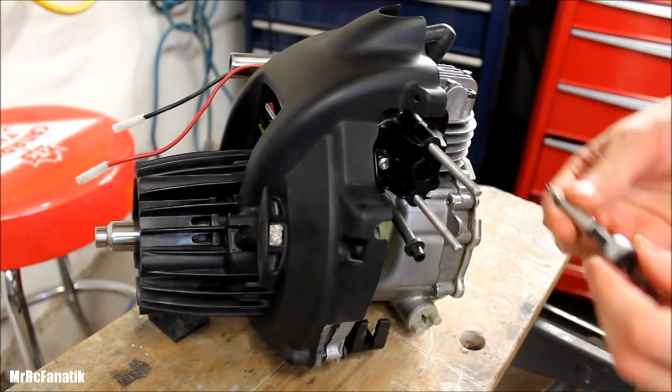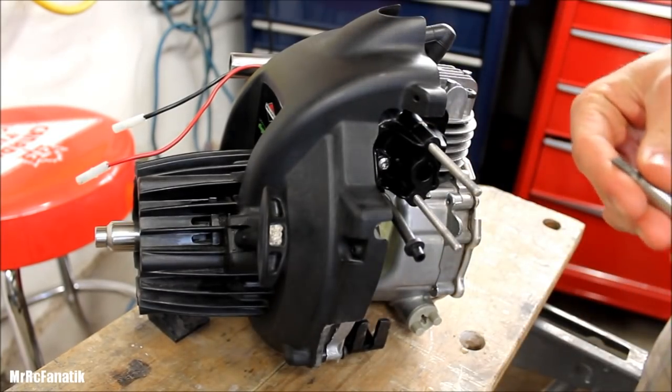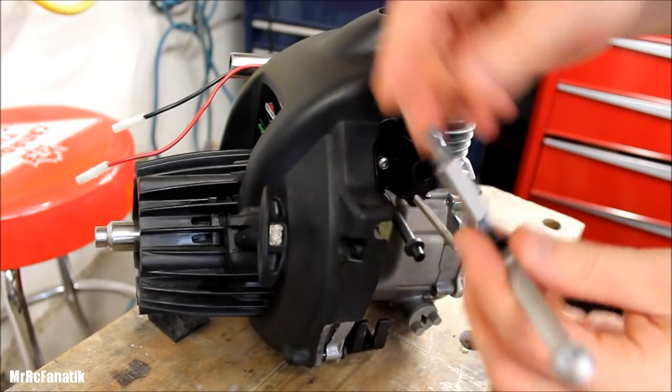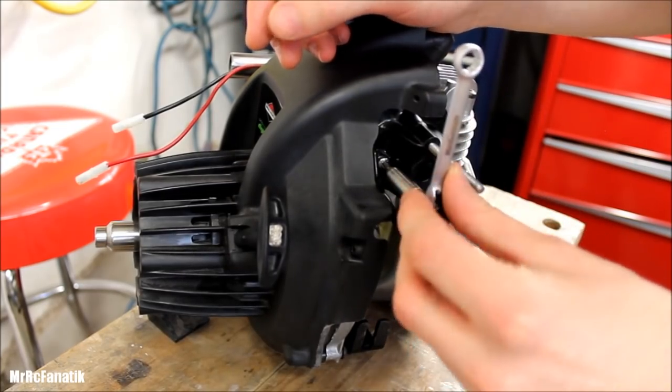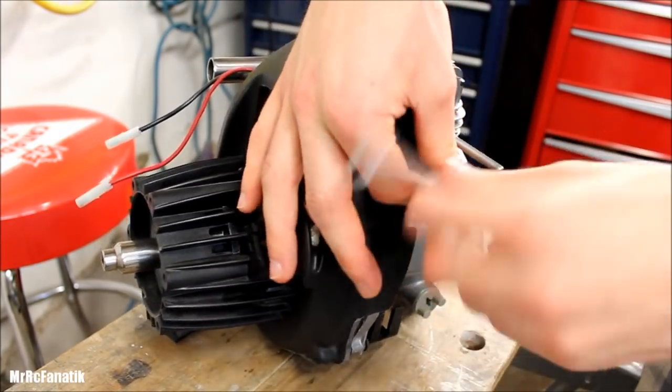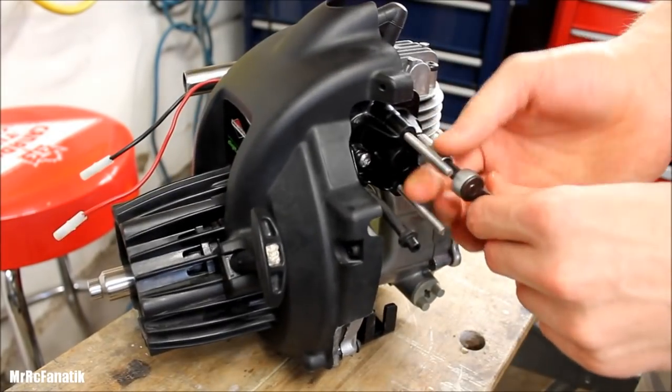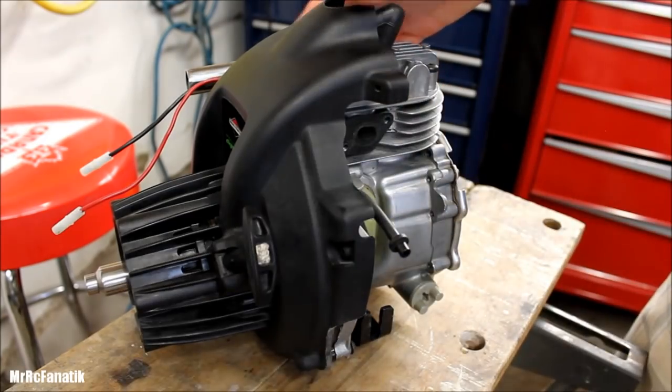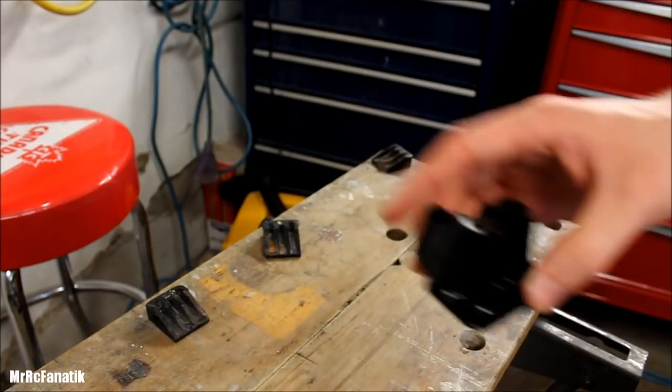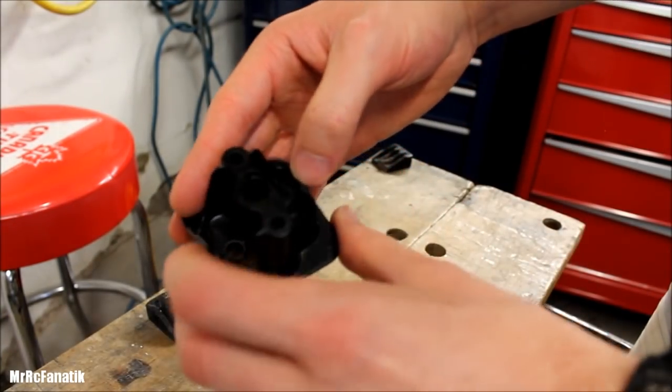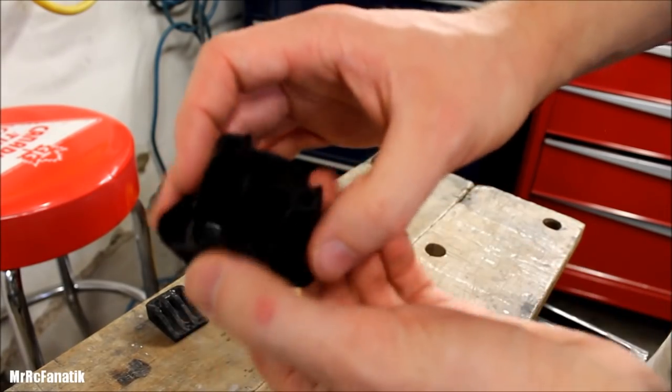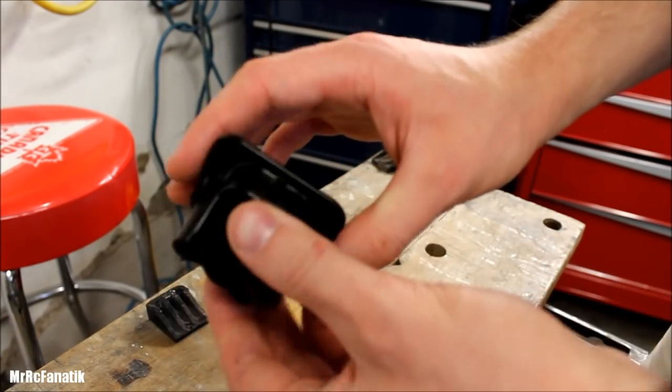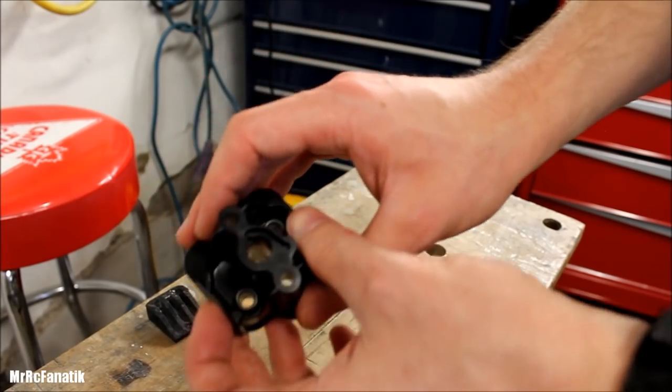Then we're onto the plastic isolator or spacer, or whatever you want to call it. We're going to grab our Torx bit. Again, it's a T25. Now that comes off. So we're going to be dealing with this plastic isolator spacer part that goes between the engine block and the carb.